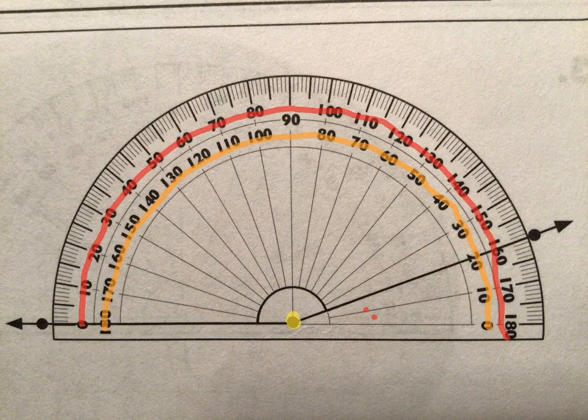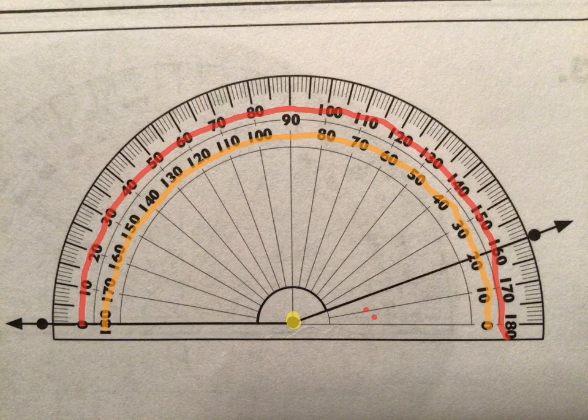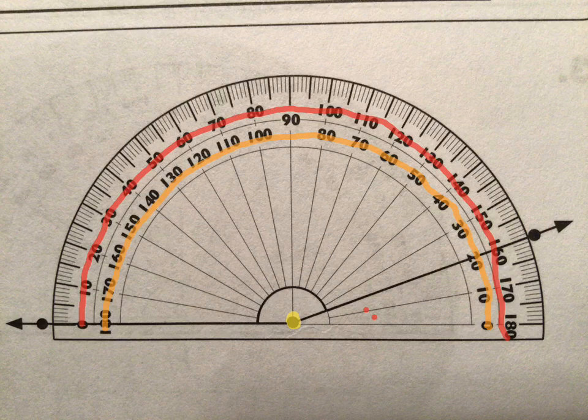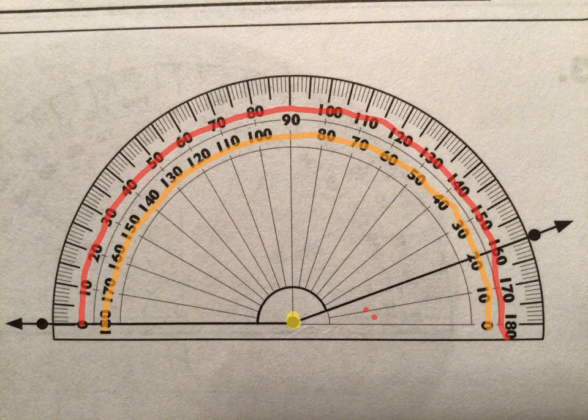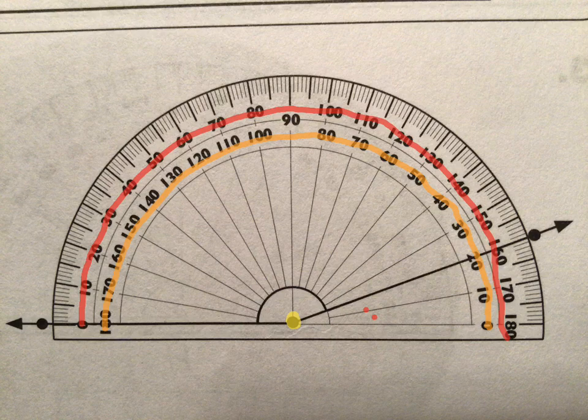So that color coding really helped some students to see, okay, inner scale, those numbers going around in the orange are part of the inner scale, and the numbers in the red are the outer scale.